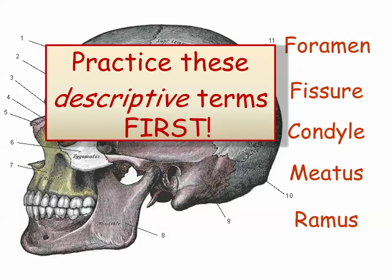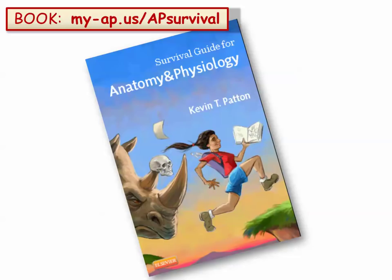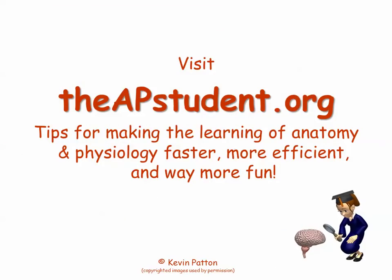My advice is to learn these general geographical terms first, before you start trying to tackle the individual structures of the human skeleton. If you spend just a little time drilling with these general terms, the rest of it will go much faster and much easier. Where can you find a list of the important descriptive terms and their meanings? One source is my survival guide for anatomy and physiology — you'll find a lot more shortcuts there too. Another place to look is my online web guide to human anatomy and physiology, where you can download a free list of these terms. For more videos, shortcuts, tips, and practical advice for learning the skeleton and other aspects of human structure and function, visit theapstudent.org and sign up for the free newsletter.